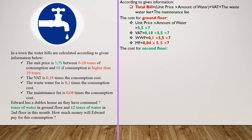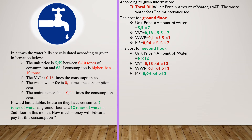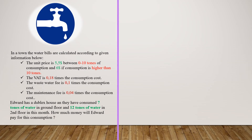And the maintenance fee is 0.04 multiplied by consumption cost. Since the total consumption is above 10 tons on the second floor, the unit price will be 6 dollars. So consumption cost will be 6 multiplied by 12. The VAT is 0.18 multiplied by this consumption cost. The waste water fee is 0.1 multiplied by consumption cost. The maintenance fee is 0.04 multiplied by consumption cost.